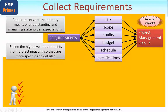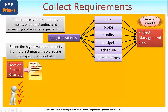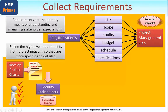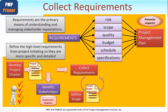Recalling an earlier module, the Develop Project Charter process produces the project charter containing those high-level requirements. In a later module, we'll look at the stakeholder knowledge area — specifically the Identify Stakeholders process — whose main output is the stakeholder register containing details of all known stakeholders. We then come to the current module where we are collecting the requirements, and from here we will go on to define the scope of the project, producing the project scope statement.